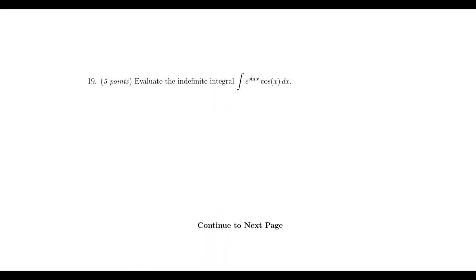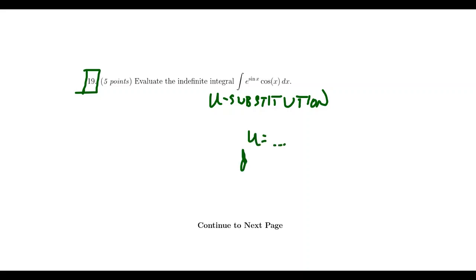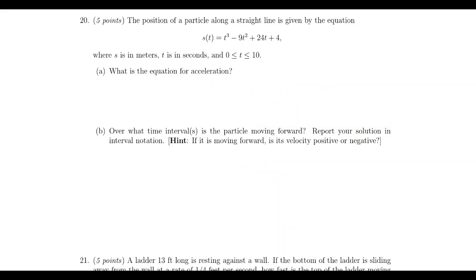Question number 19 also gets a special block because this is a question you definitely want to practice — it did not appear on any of the previous exams. This is a question taken from our very last lecture about u-substitution. You should be able to compute an indefinite integral using u-substitution: set u equal to whatever, set du equal to whatever, make the substitution, and calculate the antiderivative. We didn't see that on a previous exam, so be able to compute antiderivatives using the technique of u-substitution.